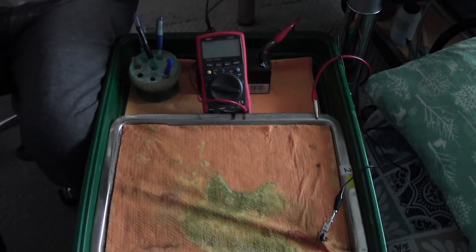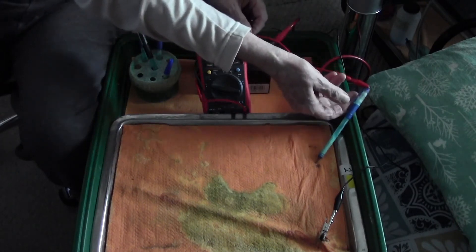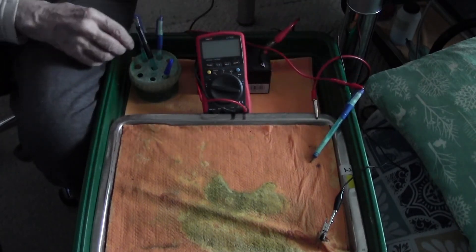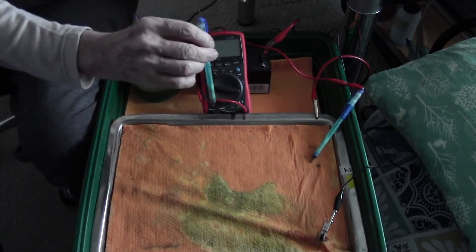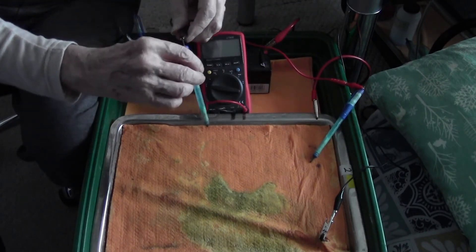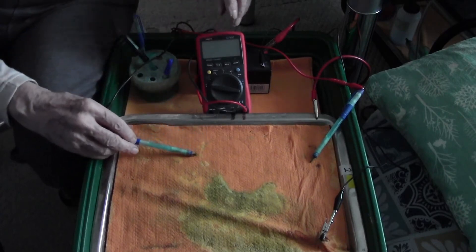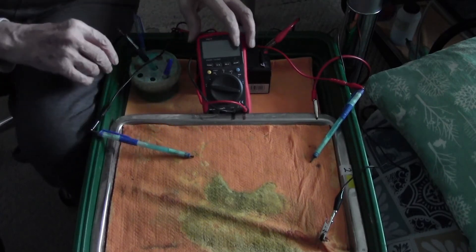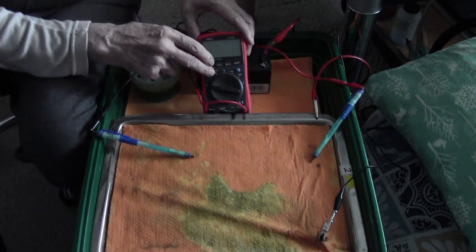This is connected to the positive side of the meter as you can see and this is another copper copper sulphate electrode which is connected to the negative side of the meter. Now the meter is on volts DC volts